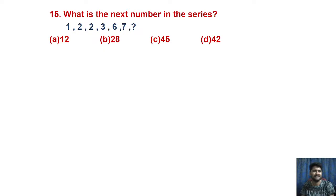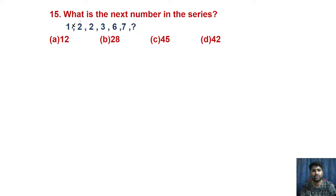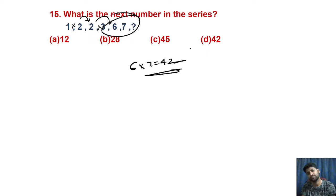Next number series: 1, 2, 2, 3, 6, 7. What is the logic? 1 multiplied by 2 equals 2. 2 multiplied by 3 equals 6. So the answer is 6 multiplied by 7 equals 42. Multiply two consecutive numbers to get the next number in the series.